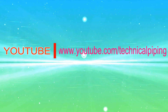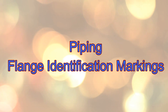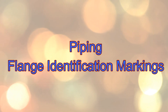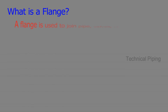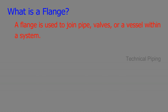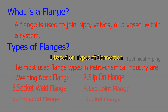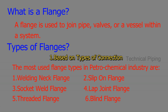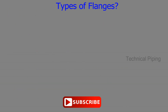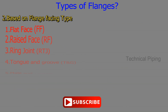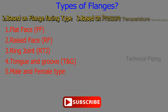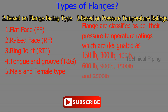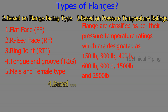Welcome to the Technical Piping YouTube channel. This video explains about types of flanges used in the oil and gas industry, and also detailed explanation about flange identification markings. A flange is used to join pipes, valves, or vessels within the system. Flanges can be classified in several ways: based on types of connection, based on flange facing types, based on pressure-temperature ratings, and based on material types.